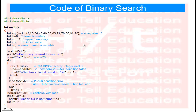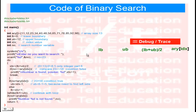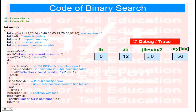Now take a second example. This is the full code of the binary search algorithm. This time our search value is 23. Starting the trace: lower boundary is 0, upper boundary is 12. IDX = (0 + 12) / 2 = 6. At index 6, the value is 56.